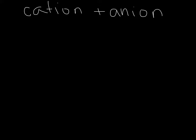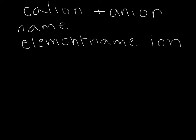A cation is named by just writing the element name with the word ion after it. So if I have calcium plus 2, I write calcium ion.